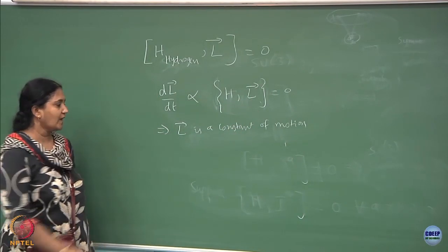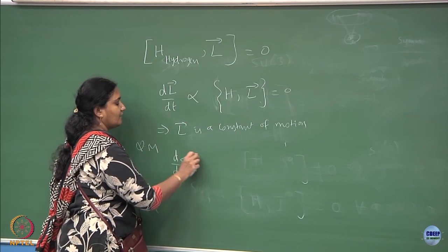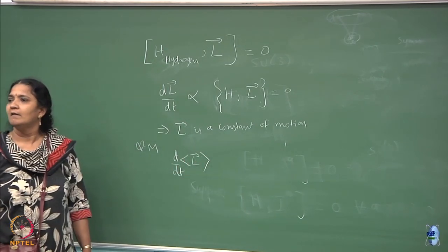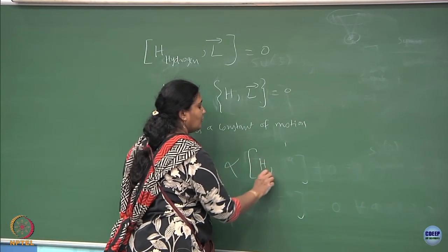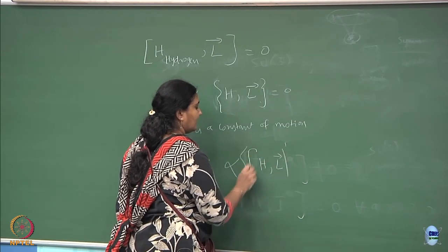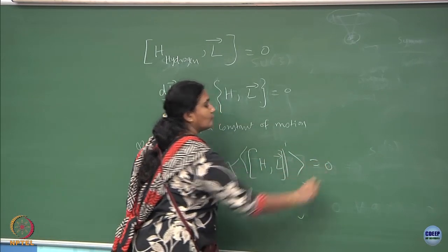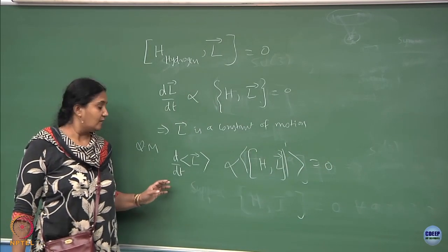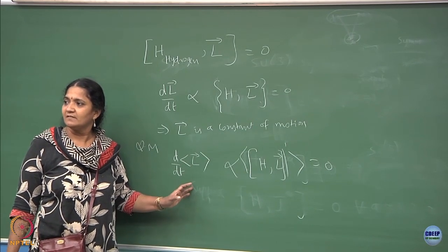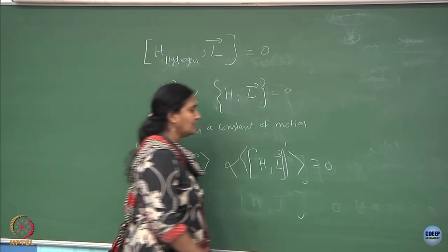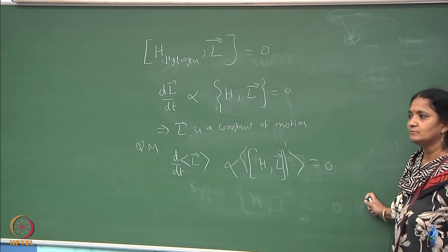But if you go to quantum mechanics, the difference is you have d/dt of the expectation value of L, and this is going to be proportional to the commutator of L with the Hamiltonian, and this is going to be zero. That is why you say the rate of change of angular momentum is zero, meaning it is a conserved quantity. So the expectation value of L is going to be constant.